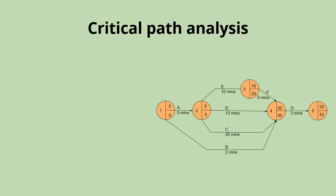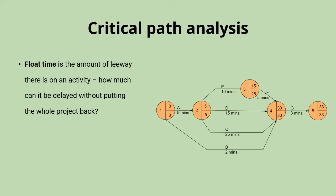The proper term for this wriggle room is float time — the amount of leeway an activity has, meaning how much it can be delayed without putting the whole project back. We calculate total float for each activity by taking the latest finish time of that activity, subtracting the activity duration, and further subtracting the earliest start time. For example, activity F (frying eggs) has an LFT of 30 minutes, minus duration of five minutes, minus EST of 15 minutes — giving a total float of 10 minutes.